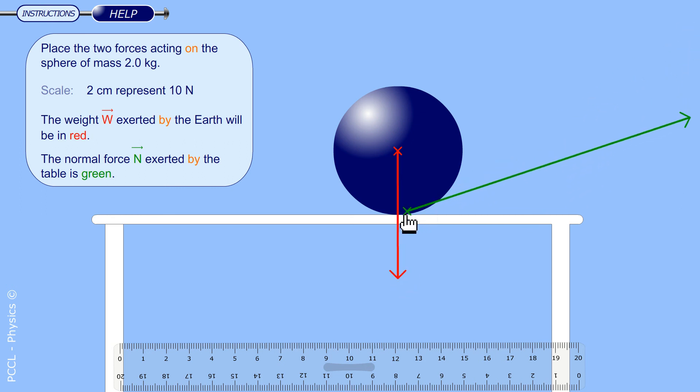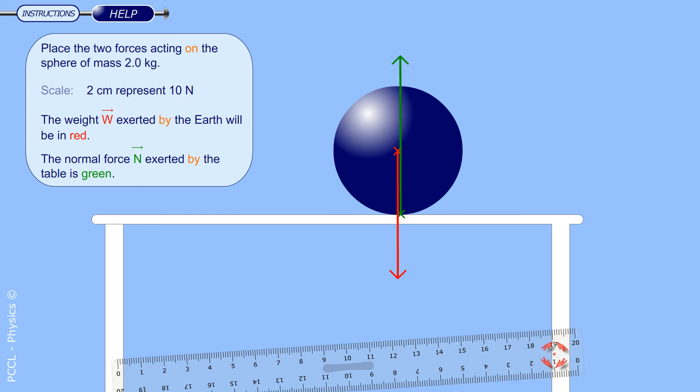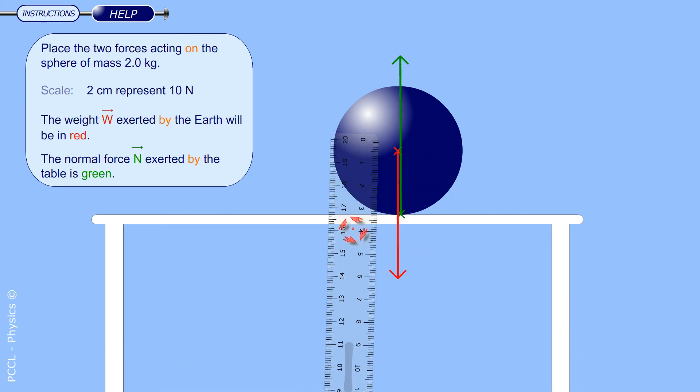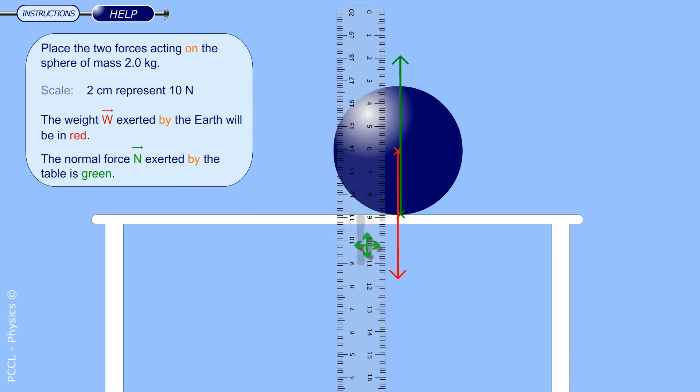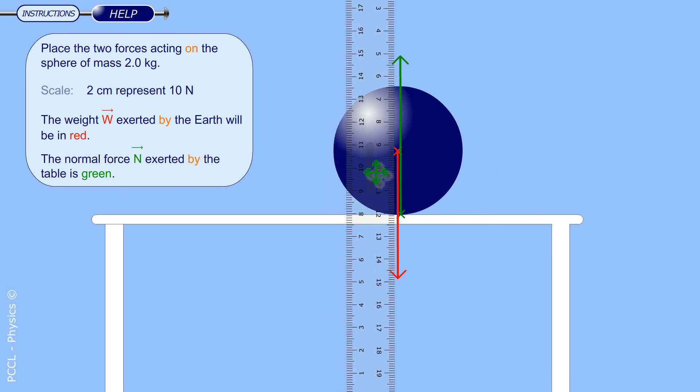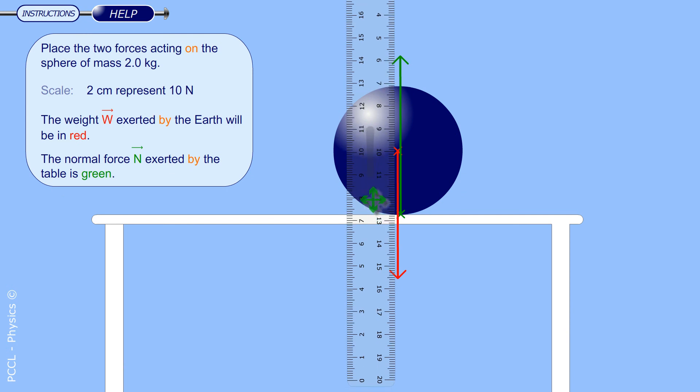What about the force applied by the table? Well there is only one contact point. So this force is located here and since these two forces are opposed it will be vertical and directed upwards. I have to draw the right lens. The weight is not given. But you see here that the mass of the sphere is 2 kilograms. The weight is therefore 20 Newtons. 2 centimeters represents 10 Newtons. This will give 4 centimeters for the weight.